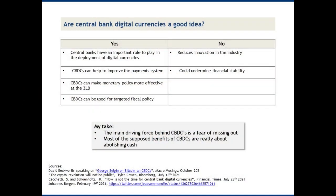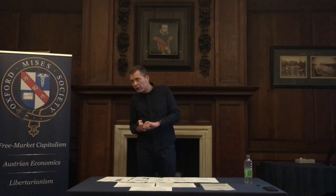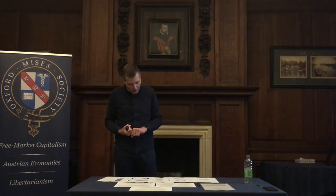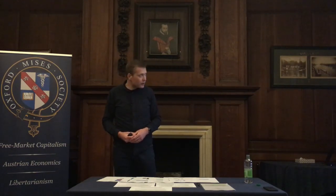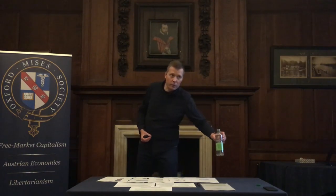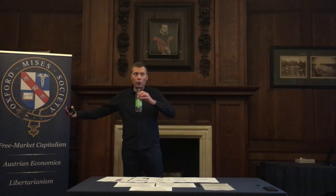The second main argument is that CBDCs can help improve the payment system. I'm very sympathetic to this — the payment system could be improved dramatically. The argument is CBDCs will help transfers of large sums and reduce the need for physical cash. However, the biggest problem with transferring money is international payments, and CBDCs don't obviously help there, since anti-money-laundering regulations are the main barrier.